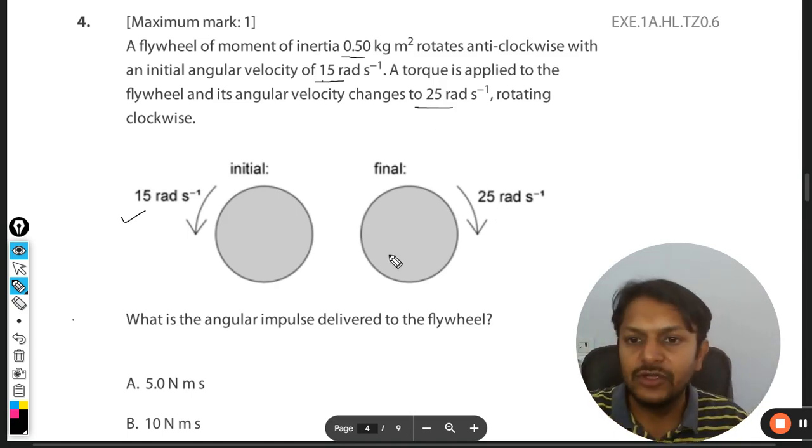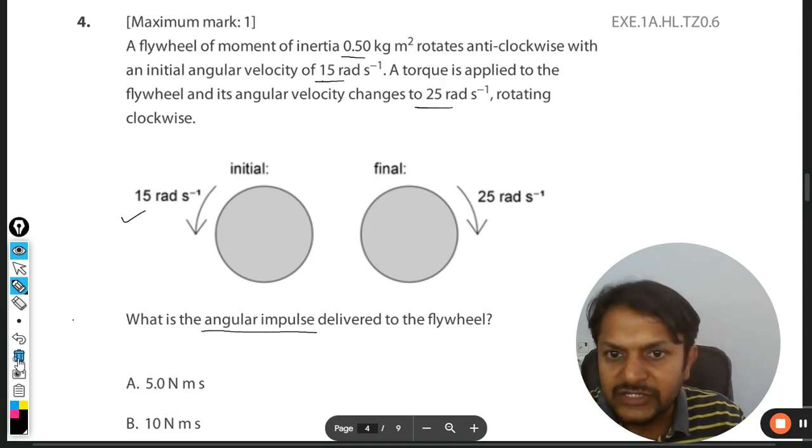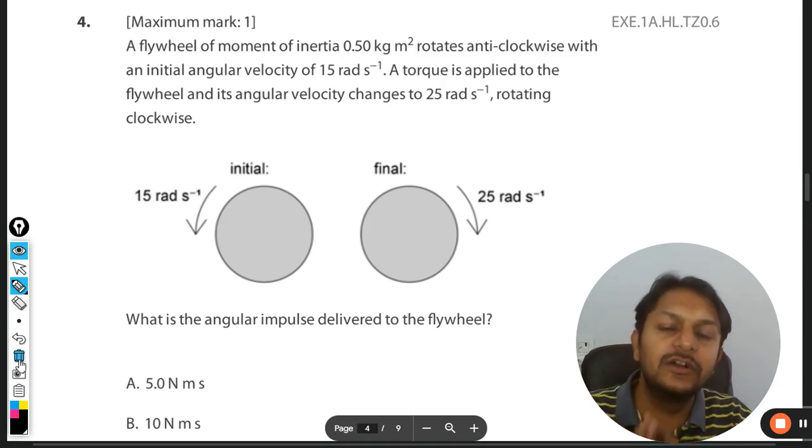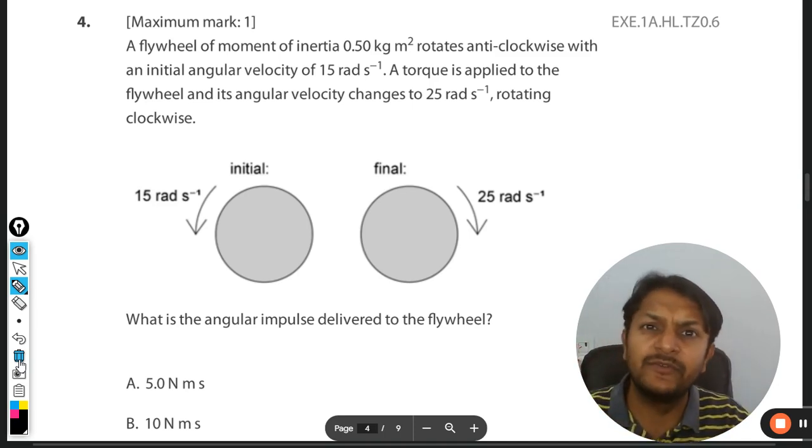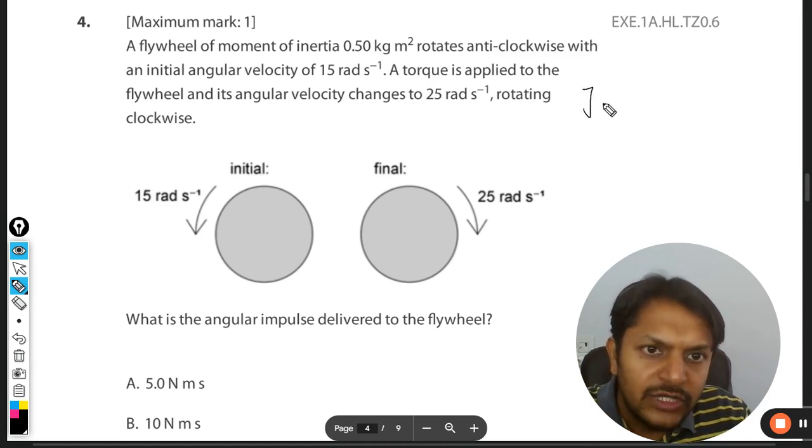What is the angular impulse? So we have to learn about angular impulse. I told you angular impulse is a very important concept for IB physics—they are really interested in this. The impulse is equal to change in angular momentum, or it is equal to the torque into delta t.